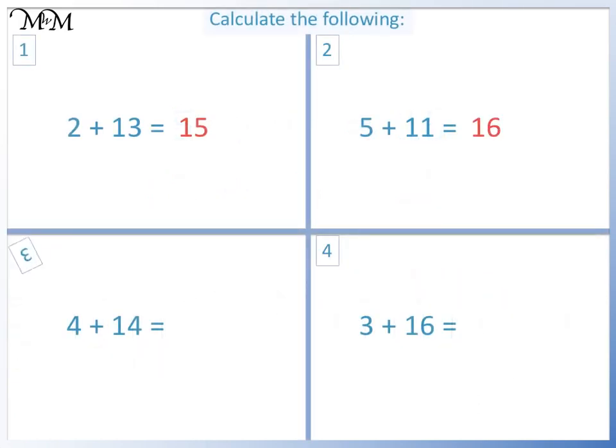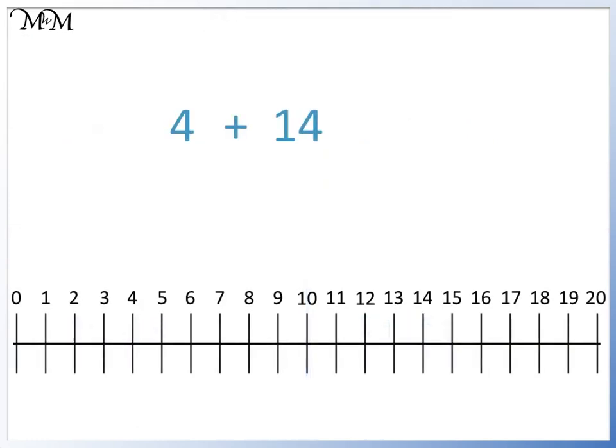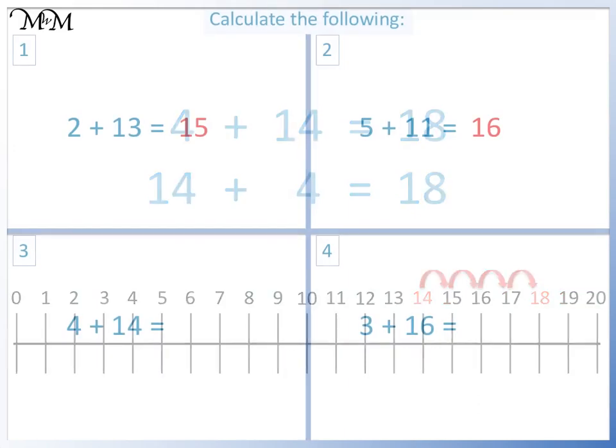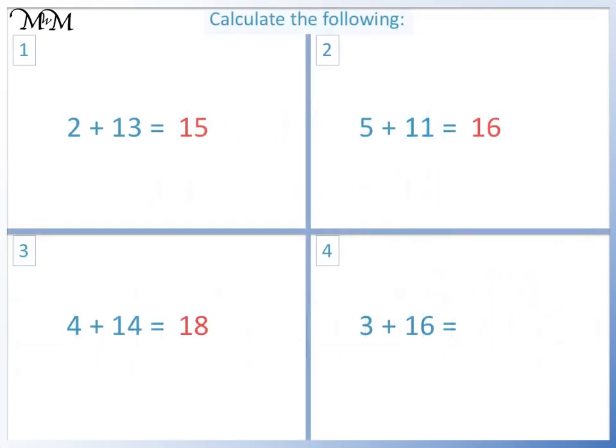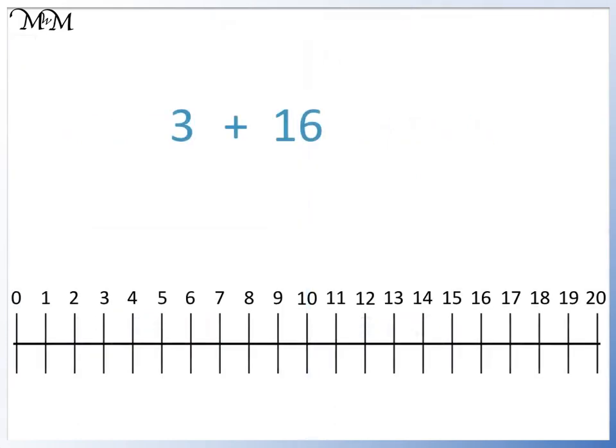Question 3. We'll start with 16 and add on 3. 16 plus 3 equals 19. And therefore 3 plus 16 equals 19.